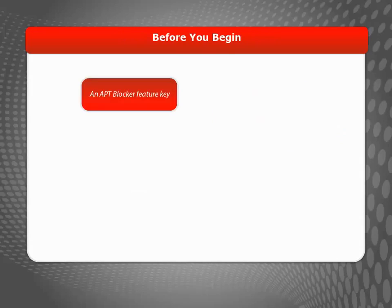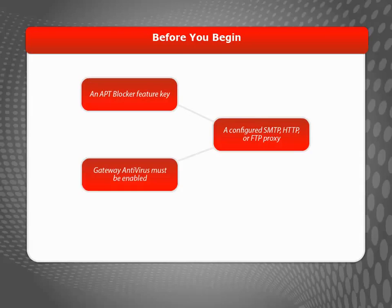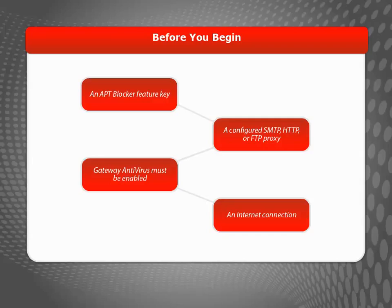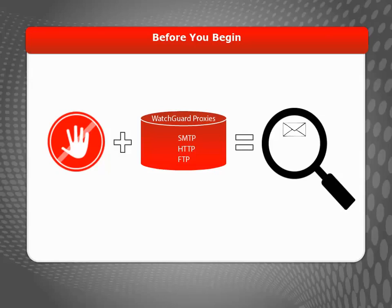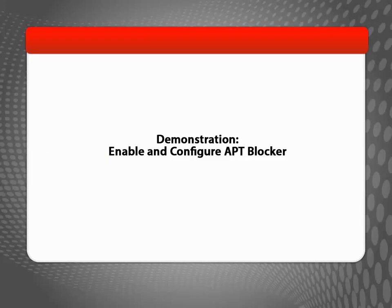Before you start working with APT Blocker, make sure you have these items. If you don't have an APT Blocker feature key, contact your WatchGuard reseller. You can use APT Blocker with the WatchGuard SMTP, HTTP, and FTP proxies to scan inbound email messages and files. If you haven't already configured one of these proxy policies, you can enable it when you configure APT Blocker. Once you have everything on hand, it's time to get started with APT Blocker.